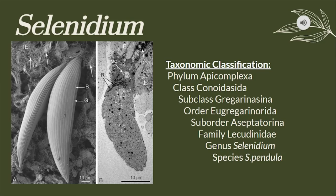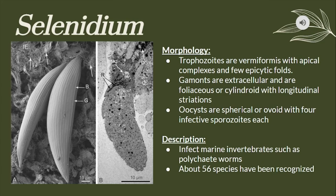Selenidium are classified under the family Lusodinidae. This genus is known to have vermiform trophocytes with apical complexes and few epicytic folds. The gamonts are extracellular and are cylindroid in shape with longitudinal striations, and the oocysts are spherical or ovoid with four infective sporozoites each. With about 56 species recognized, these parasitic flagellates are known to infect marine invertebrates such as polychaete worms.